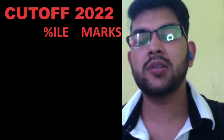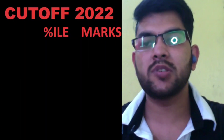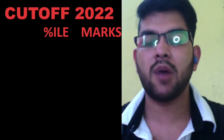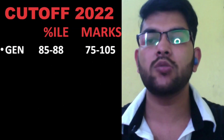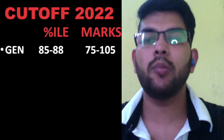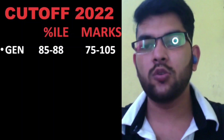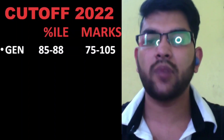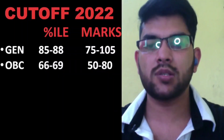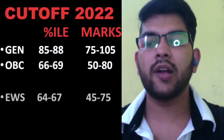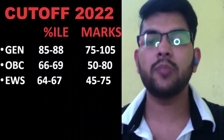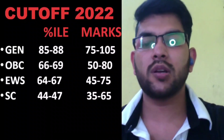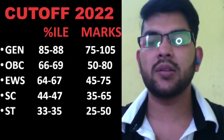The percentile will remain the same irrespective of the difficulty level of the paper, but for the same percentile you may need to score more or fewer marks depending on the shift. For General candidates, you need to score 85 to 88 percentile, and for that you need at least 75 to 105 marks — if your paper is hard, 75 marks; if easy, 105 marks. For OBC candidates, 66 to 69 percentile and you need to score 50 to 80 marks. For EWS, 64 to 67 percentile and you need to score 45 to 75 marks. For SC candidates, 44 to 47 percentile will be the cutoff and you need to score 35 to 65 marks.